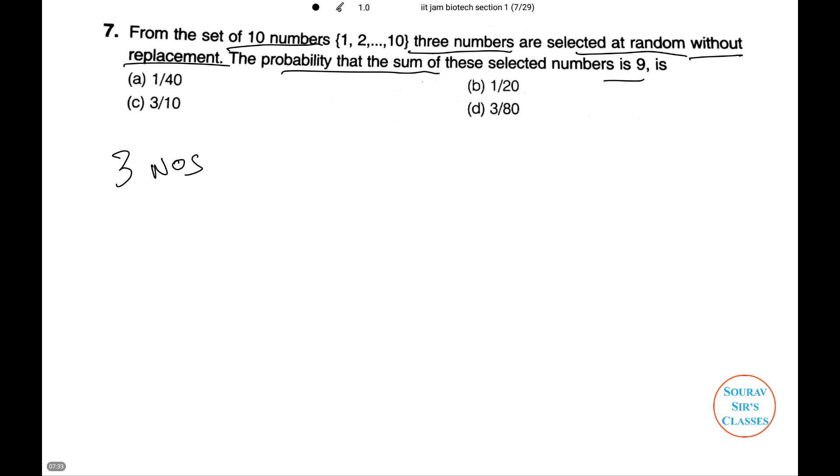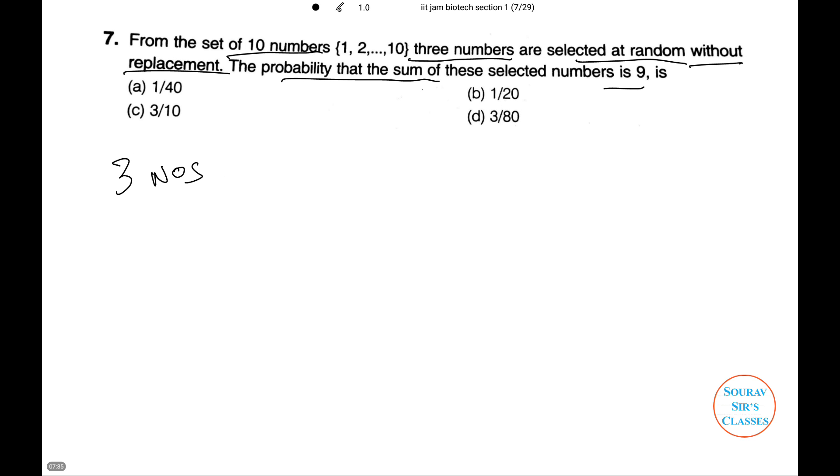They are one, two, six. We have to consider this set. Then, the next combinations are one, three, five, and two, three, four. Any more? No. This is just it.